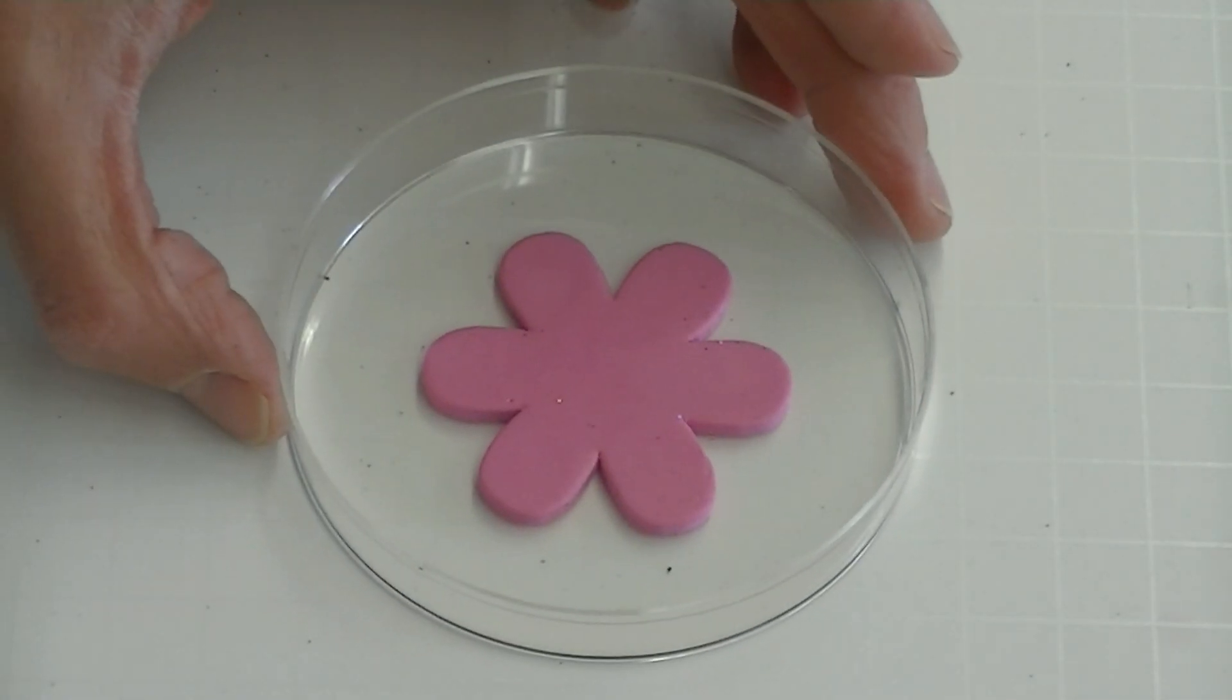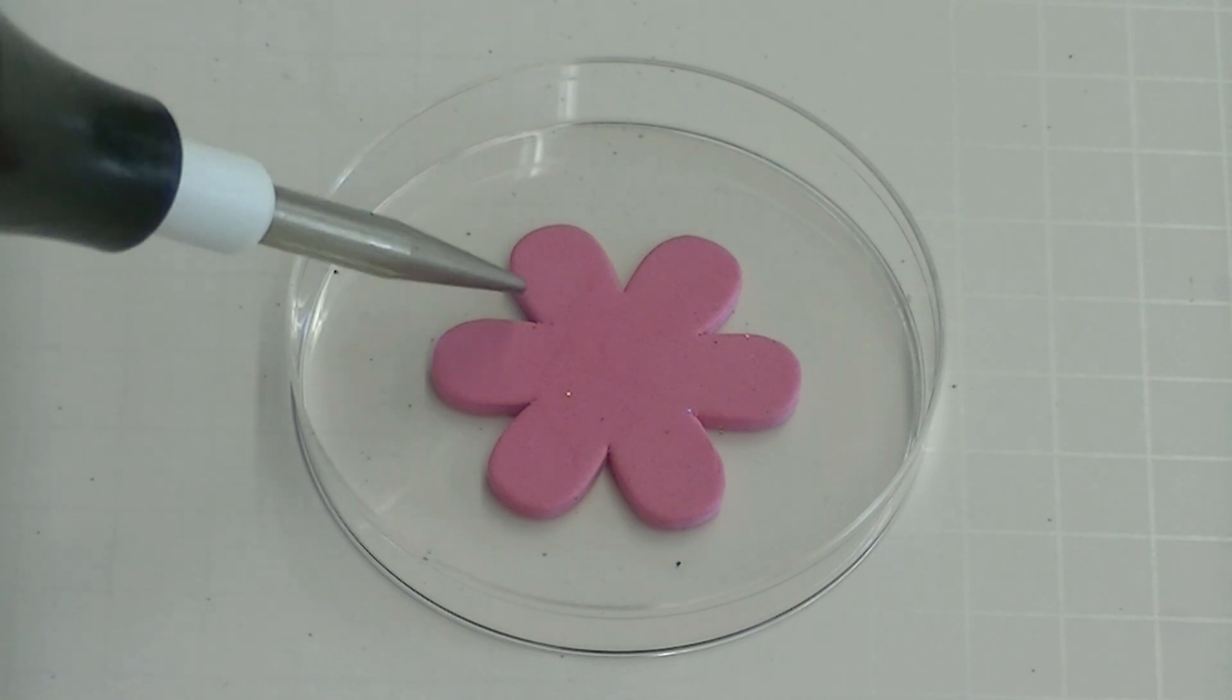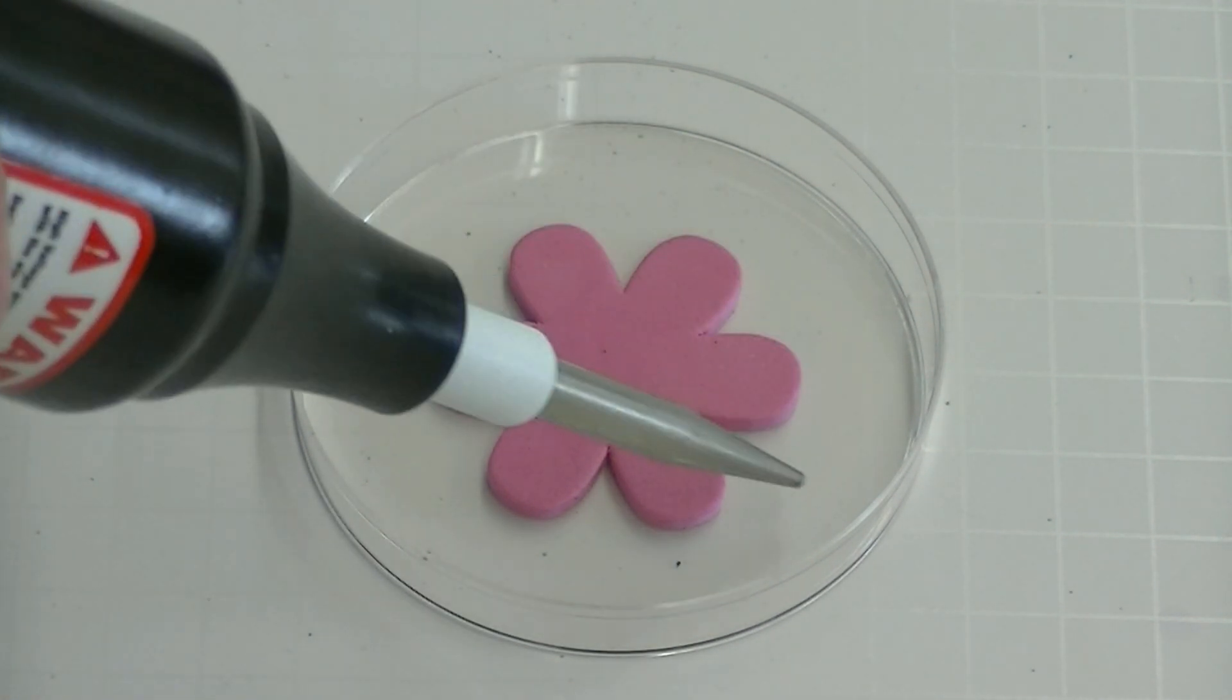The chemical treatment process is remarkably simple to carry out. A sticker is placed on top of a petri dish.